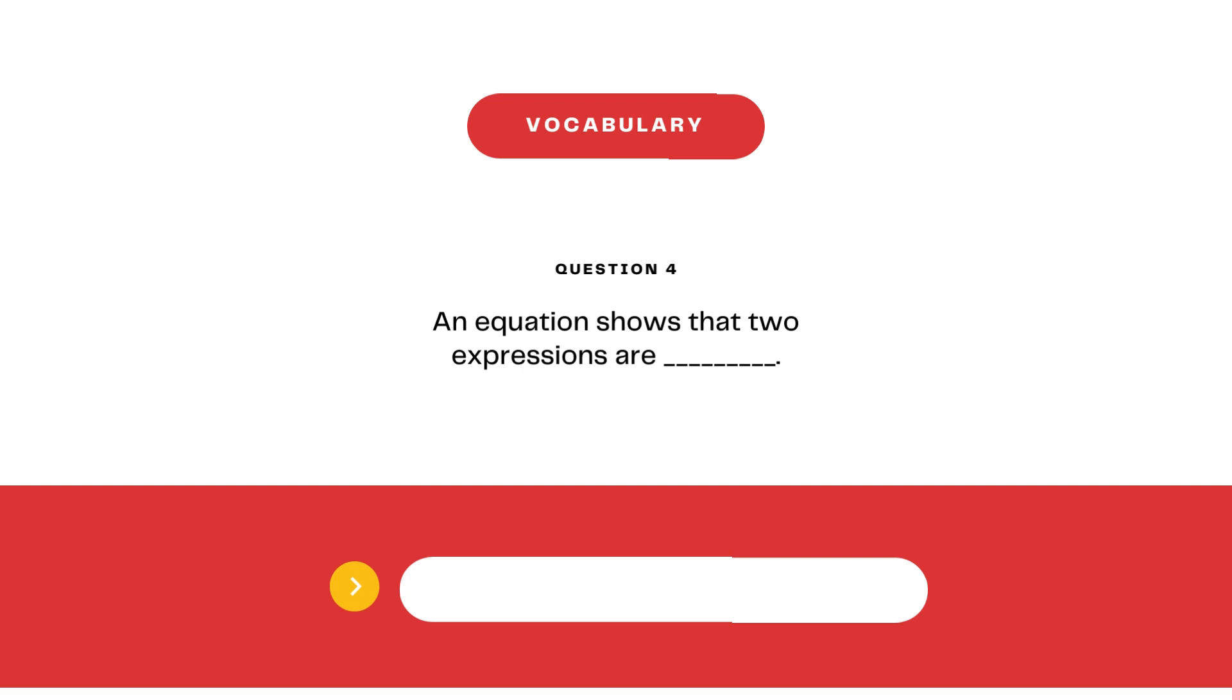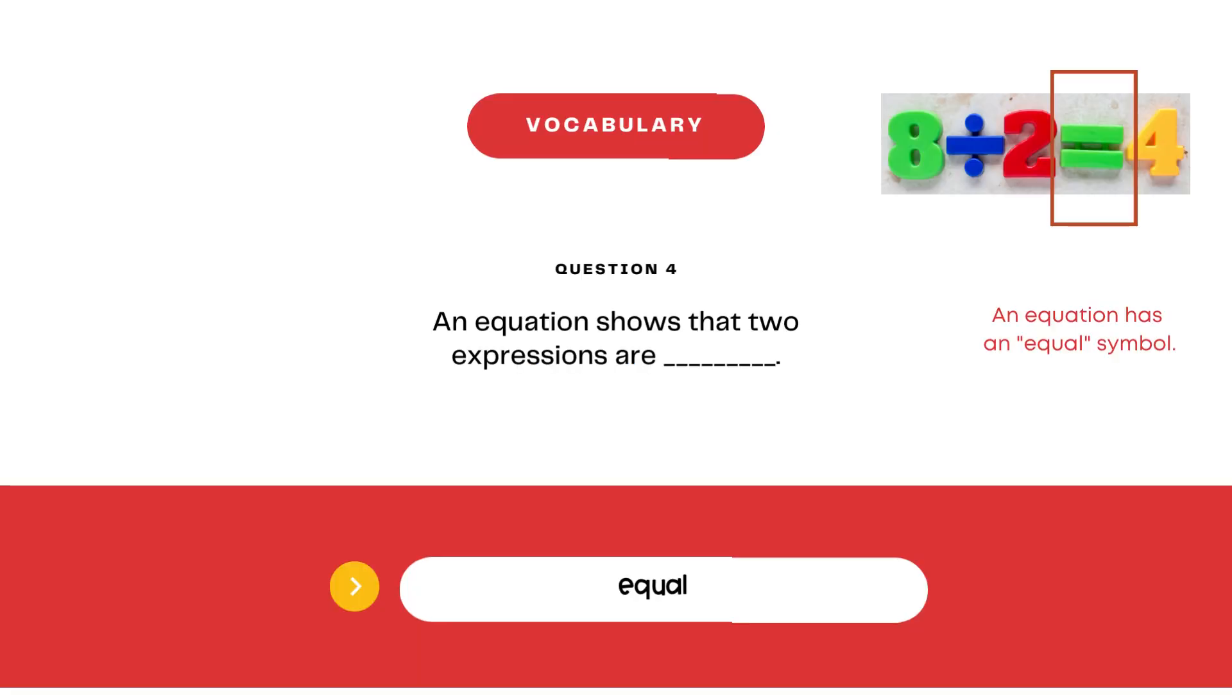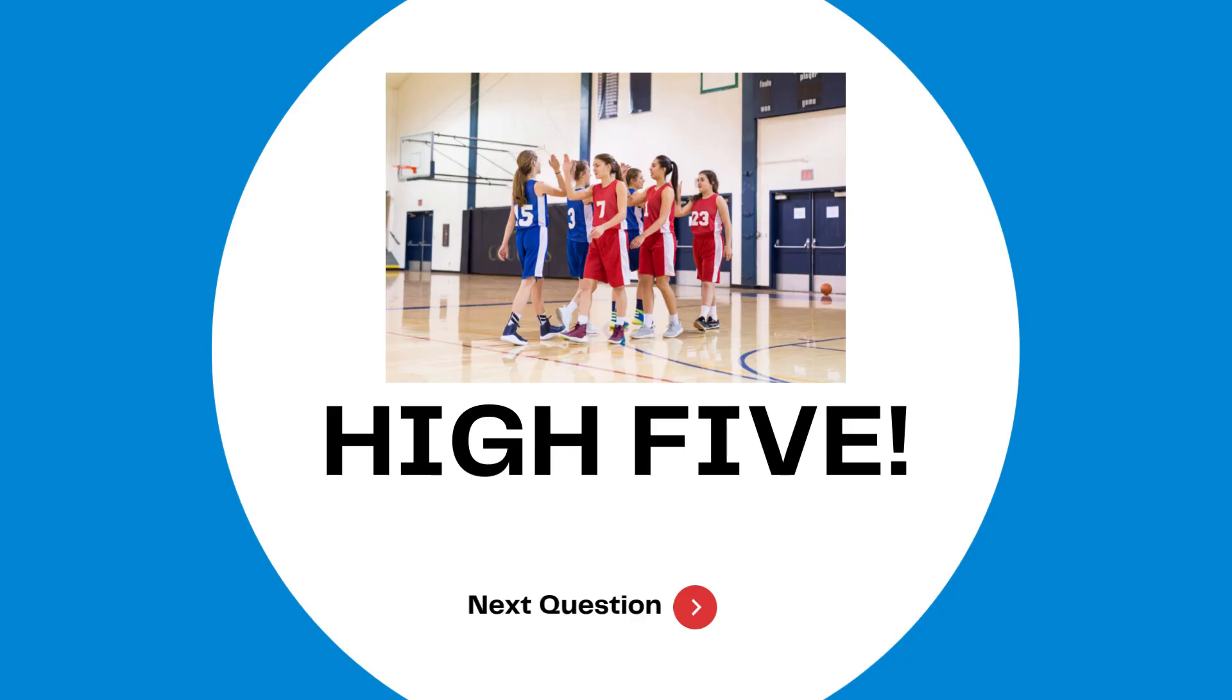Question four is a vocabulary question. An equation shows that two expressions are blank. Pause here and then press play when you have your answers ready. Answer: equal. An equation shows that two expressions are equal. Remember that an equation always has an equal sign. High five, next question.